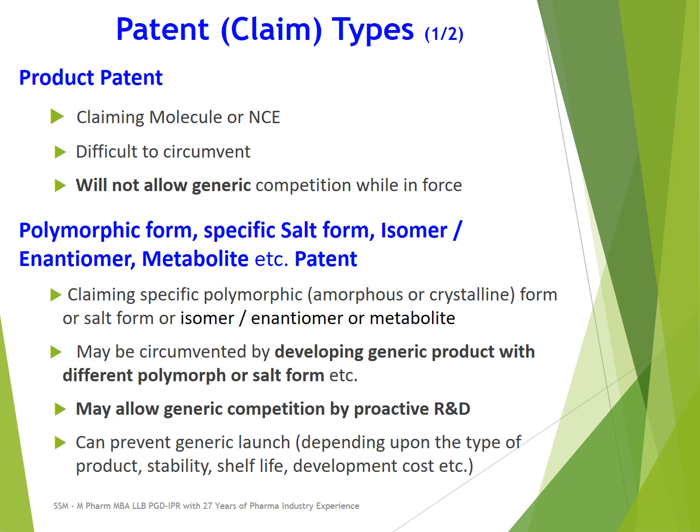The next patent type claims a polymorphic form, such as different amorphous or crystalline forms, or different salt forms like sodium, potassium, or calcium salt, or isomers, enantiomers, or metabolites of the product. These types of product claims may be circumvented or bypassed by proactive R&D from a generic company.